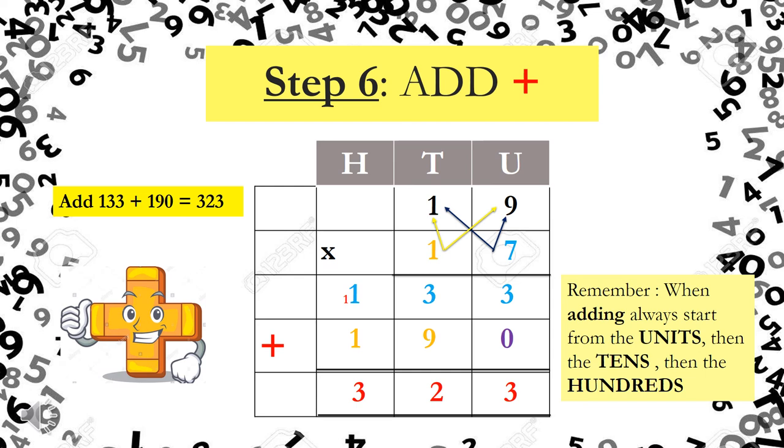So let's start in our units column. 3 plus 0 equals 3. 3 plus 9 equals 12. I write down my unit, which is 2. And I carry the 1. 1 plus 1 is 2. Plus the 1 I carry equals 3. Therefore, boys and girls, 19 times 17 equals 323.